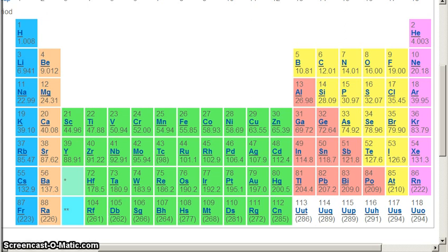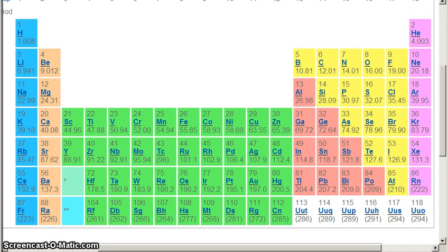For Na, it has two electrons in its first energy level, eight electrons in its second energy level, and one electron in its third energy level. And for Cl, it has two electrons in its first energy level, eight again in its second energy level, and this time, it has seven in its third energy level.